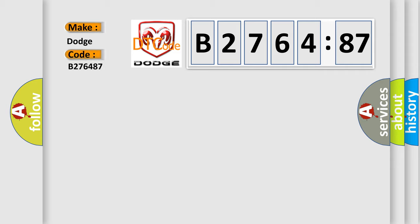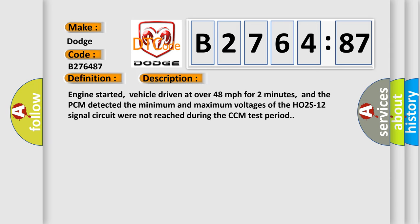So, what does the diagnostic trouble code B276487 interpret specifically for Dodge Car Manufacturers? The basic definition is H02S12 Bank 1 Sensor 2 Rich Shift Monitoring Bank 2. And now this is a short description of this DTC code.